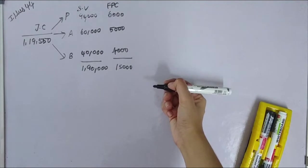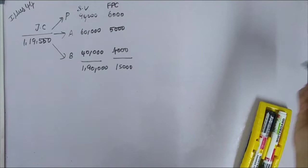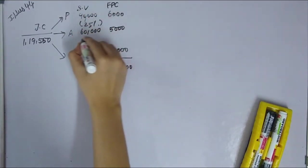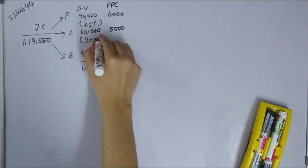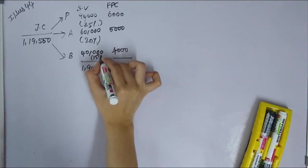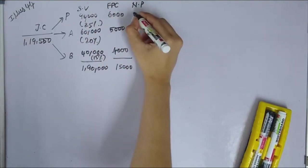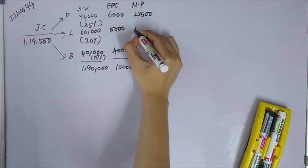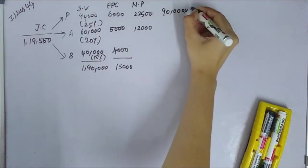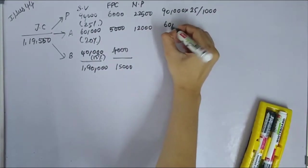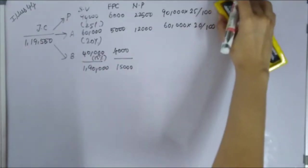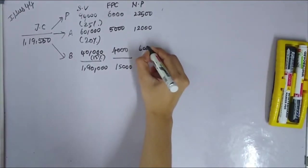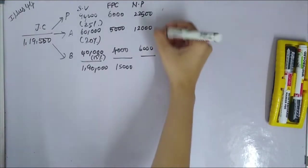Profit as percentage on sales in tabular column: sales are 90,000 at 25%, 60,000 at 20%, 40,000 at 15%. Net profit: 90,000 × 25% = 22,500; 60,000 × 20% = 12,000; 40,000 × 15% = 6,000. Overall net profit = 40,500.